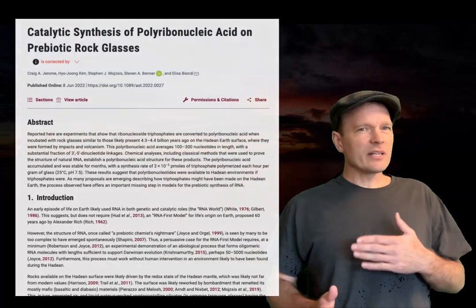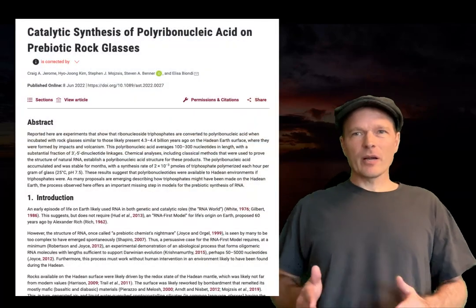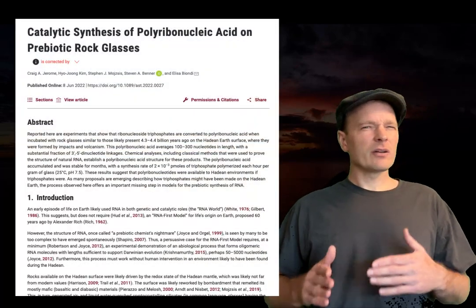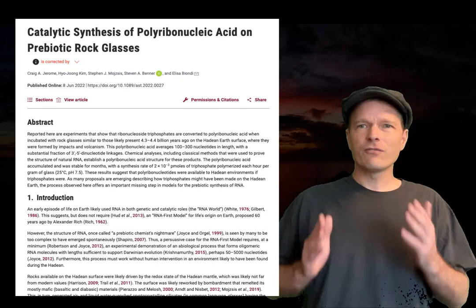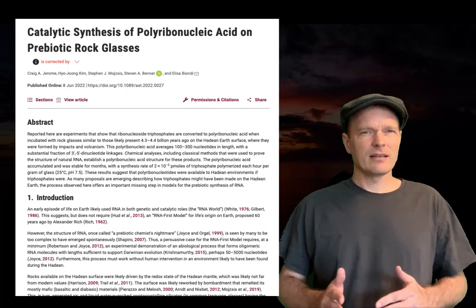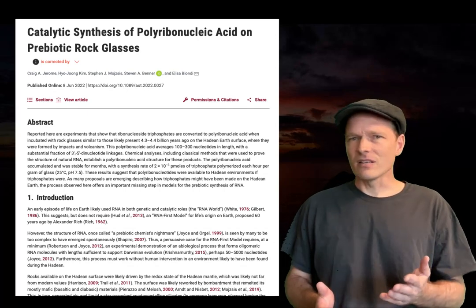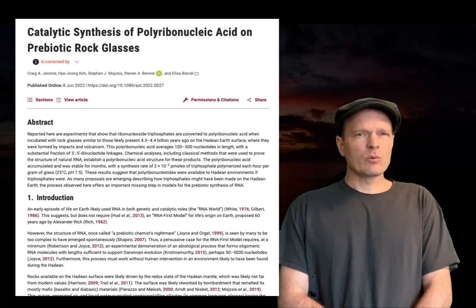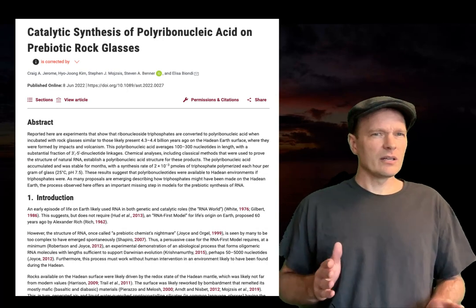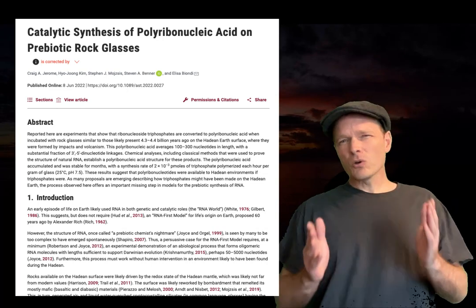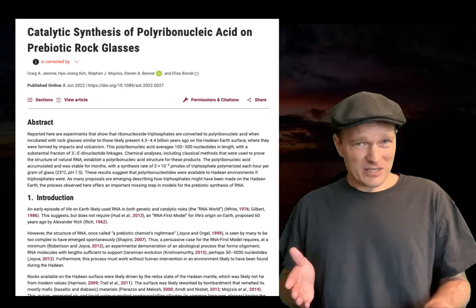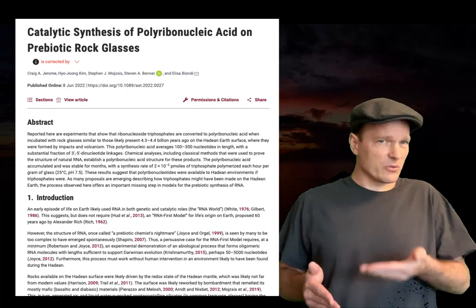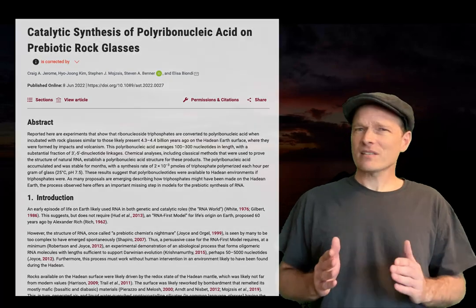Let me mention one other very interesting observation. In 2022, scientists published a paper describing how RNA molecules with 100 to 300 nucleotides in length had been found to spontaneously form on basaltic glass. The reason this is significant is because basaltic glass was everywhere soon after the crust of the Earth cooled. Is this the actual pathway that led to the origin of life on Earth? Let's not get too excited before scientists have a chance to scrutinize this, but it is a fascinating lead.